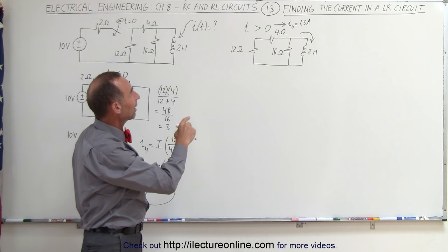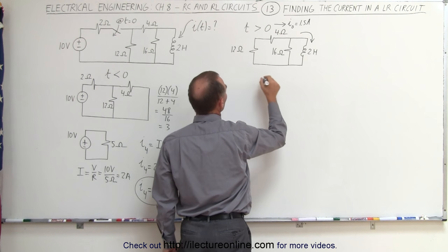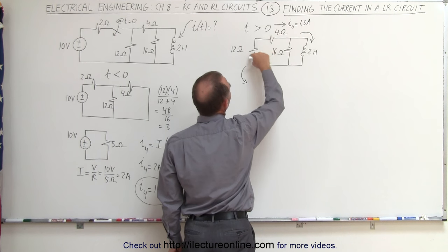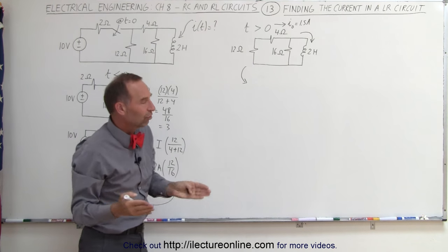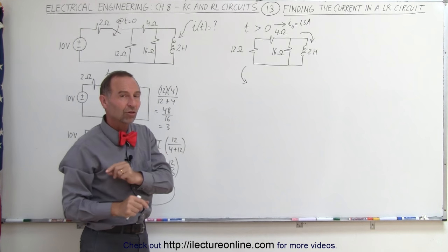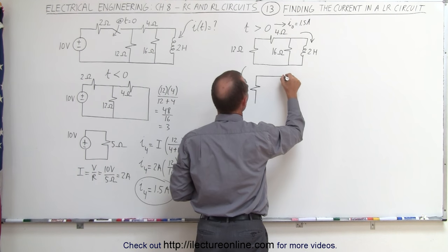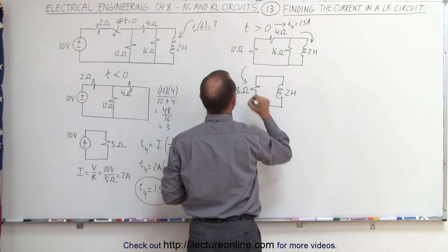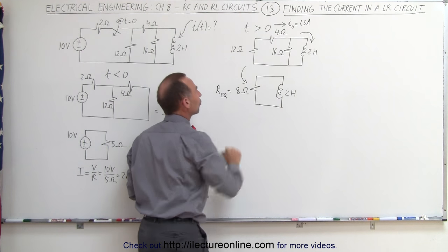Now we're going to redraw that circuit as a single equivalent circuit of an inductor and a single equivalent resistance. Notice that the 4 ohm and 12 ohm resistors combine into a single 16 ohm resistor in parallel with the 16 ohm resistor. When two resistors of equal value are in parallel, they can be replaced by a single resistor of half the value. So the equivalent resistance would be 8 ohms, and here we have the single 2 Henry inductor. That is the equivalent resistance of the circuit after the switch is opened.